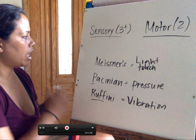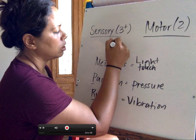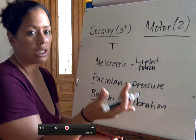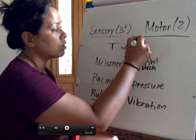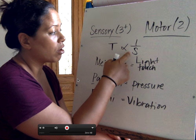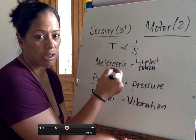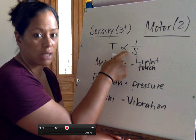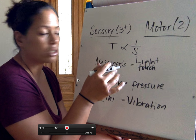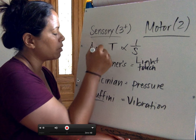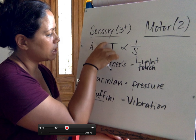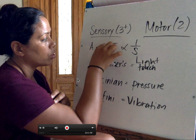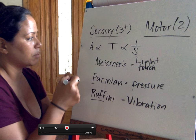Threshold is the point at which you have to hit in order for an action potential to be triggered — that's essentially your sensation. It has an opposite relationship to sensitivity. The more sensitive you are, the lower your threshold. If you're sensitive to pain, your threshold to pain is low. If you're not sensitive to pain, your sensitivity is low and your tolerance to pain is high.